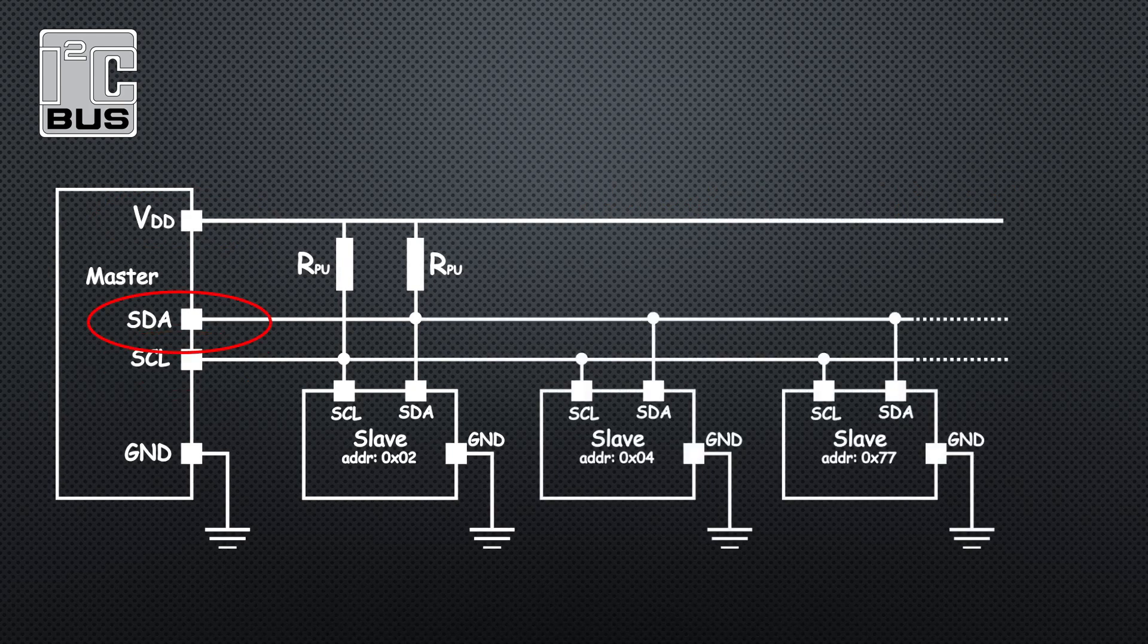The serial data line is bi-directional and operates as half-duplex because the master is the initiator of all transactions on the bus. This means that any given transaction will only be the master reading data from a slave or writing data to the slave in one direction at a time.